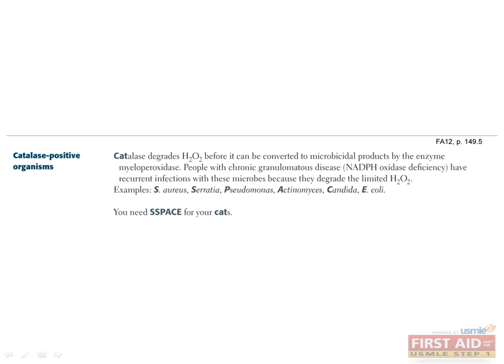Some organisms contain catalase, an enzyme which degrades hydrogen peroxide into water and oxygen. Patients with chronic granulomatous disease (CGD) rely on hydrogen peroxide formation to fight off infections. However, when CGD patients are infected by catalase-positive species like staphylococci, these bacteria can break down hydrogen peroxide and prolong their survival. Catalase-positive organisms include Staph aureus, Serratia, Pseudomonas, Actinomyces, Candida, and E. coli.